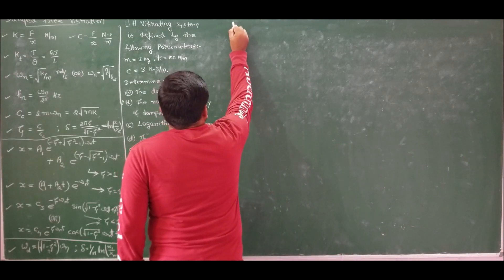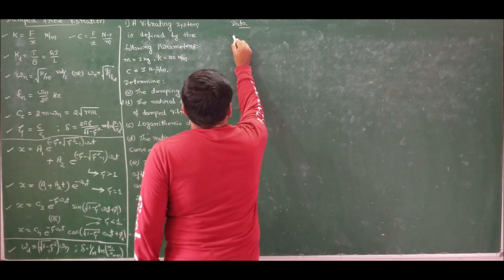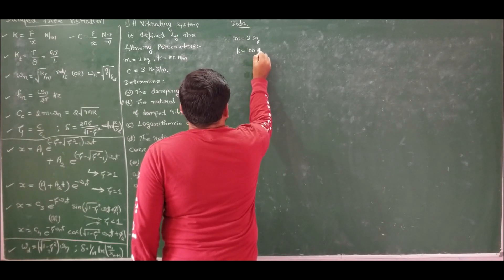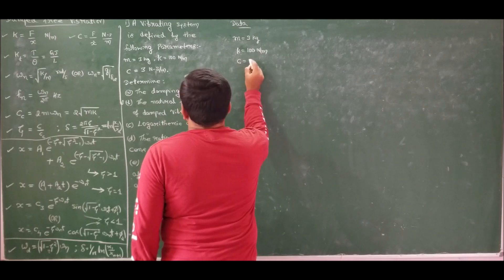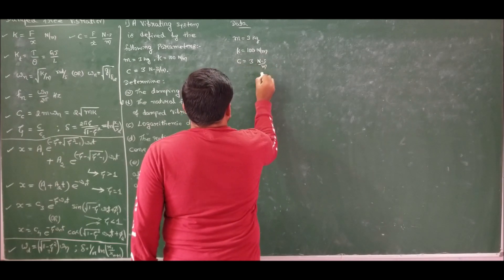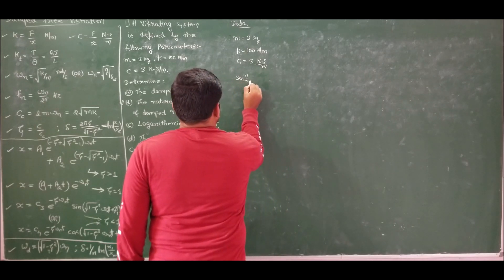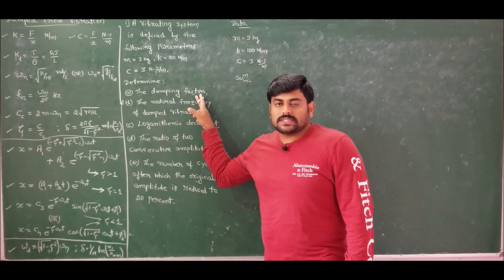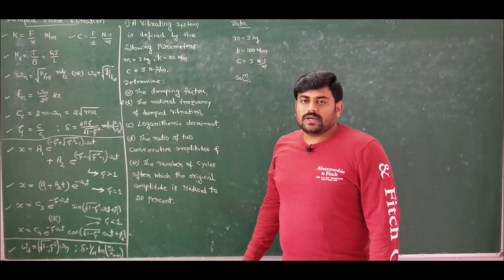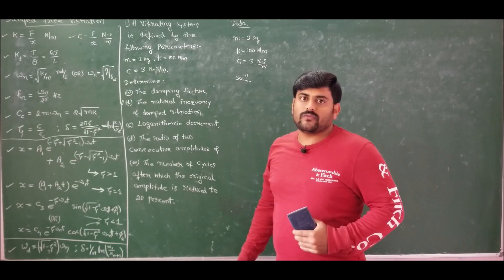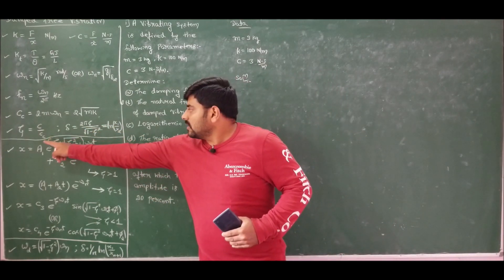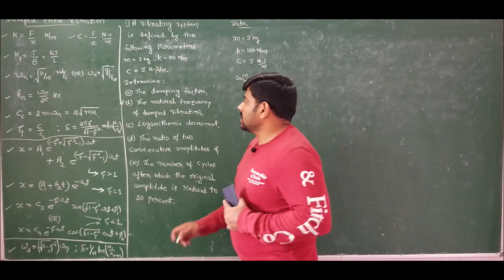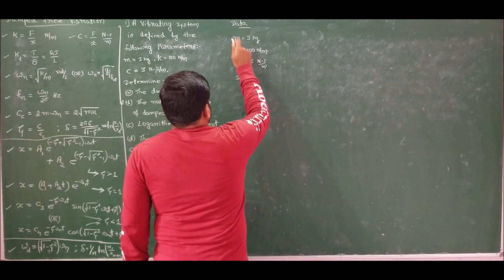The given data is: m = 3 kg, k = 100 N/m, c = 3 N·s/m. For the solution, first we find the damping factor zeta = c/c_c. To find c_c, we use the formula 2*sqrt(mk) since both mass and stiffness are known. Therefore, c_c = 2 * sqrt(3 × 100) = 34.641 N·s/m.